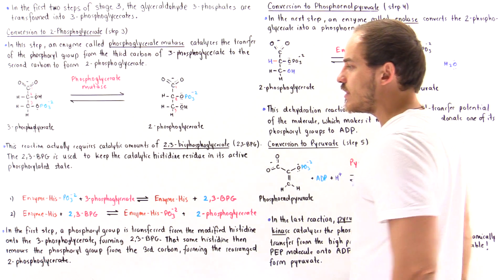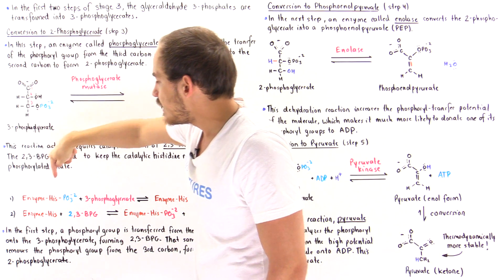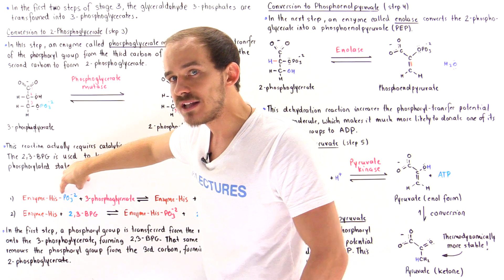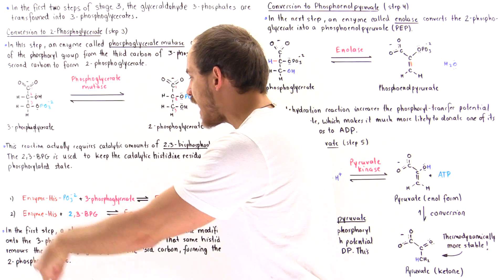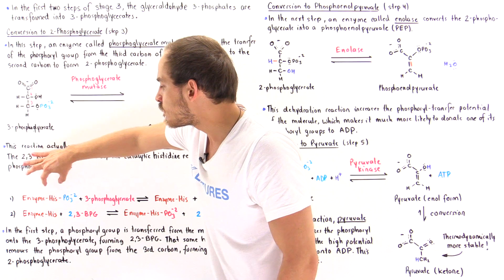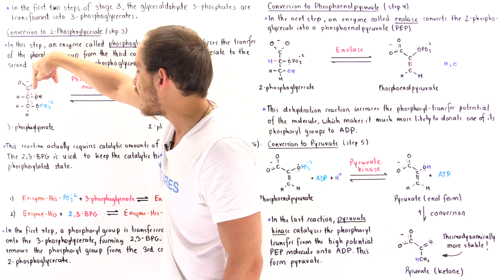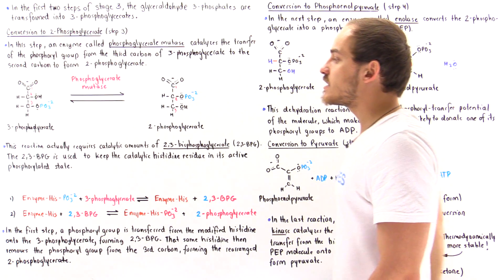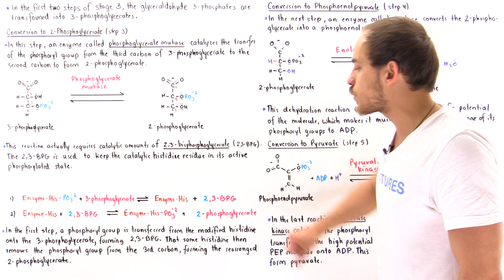Looking at the active site of this mutase, there is a catalytic histidine residue that must be modified with a phosphoryl group to catalyze the reaction. In step one, the 3-phosphoglycerate moves into the active site, and the enzyme transfers the phosphoryl group from the histidine onto the second position of the molecule, attaching it to carbon two to form 2,3-bisphosphoglycerate. This produces the enzyme without the modified histidine, along with the 2,3-BPG.